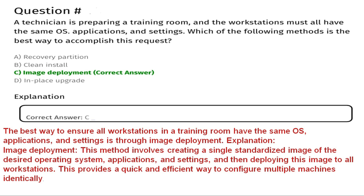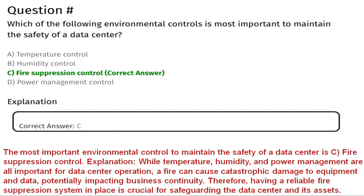Question five: a technician is preparing a training room where all workstations must have the same operating system, applications, and settings. Which of the following methods is the best way to accomplish this? Option A: recovery partition. Option B: clean install. Option C: image deployment. Option D: in-place upgrade. The correct answer is C, image deployment. This method involves creating a single standardized image and deploying it to all workstations, providing a quick and efficient way to configure multiple machines identically.